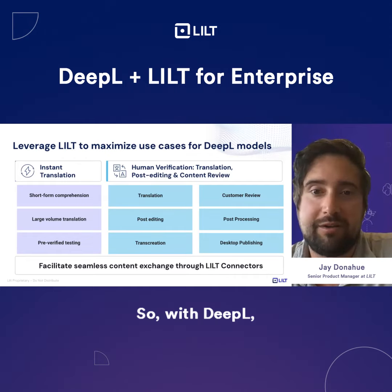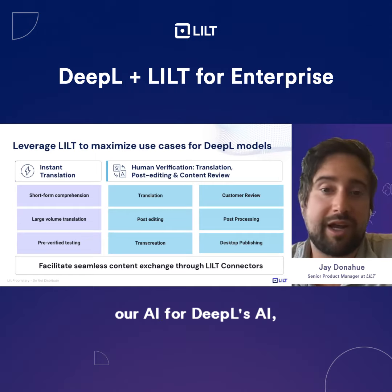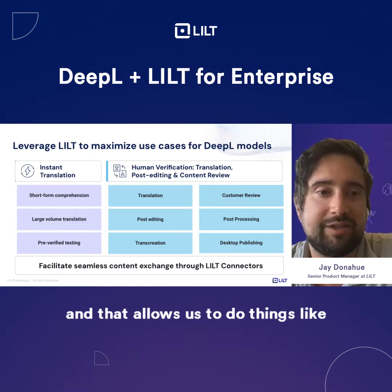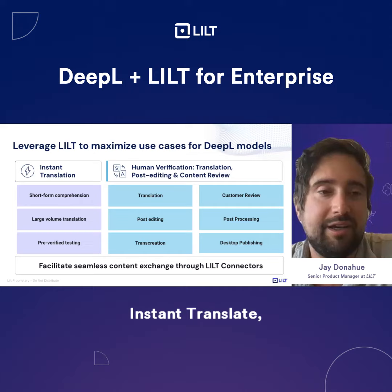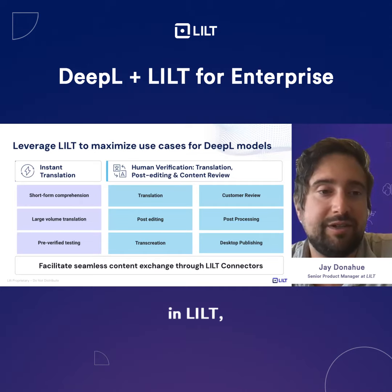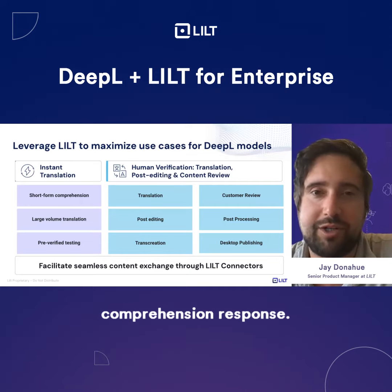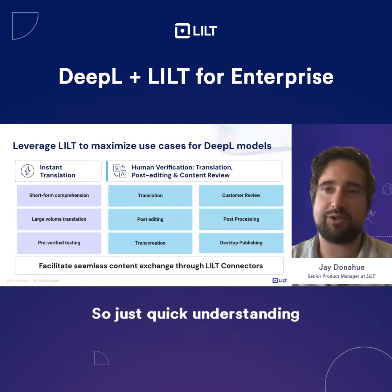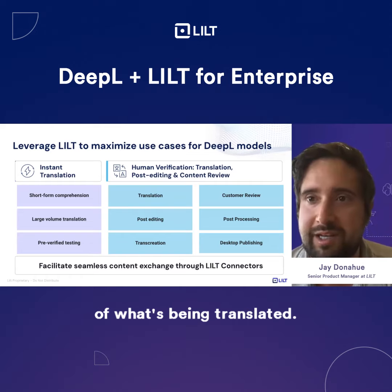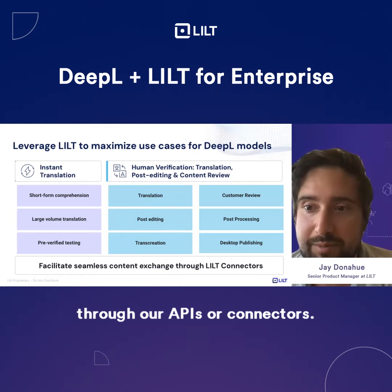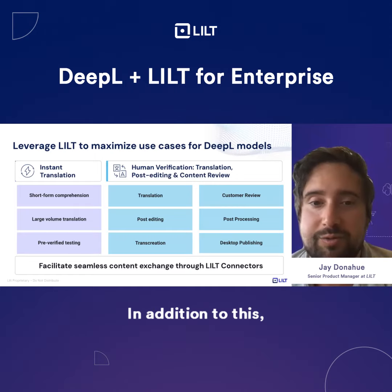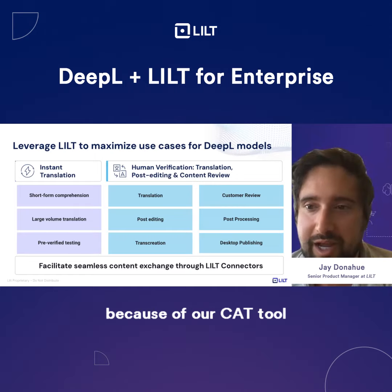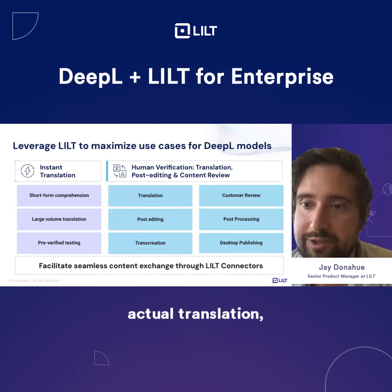With DeepL, we can swap out our AI for DeepL's AI. That allows us to do things like instant translate, where you can put text into the fields in Lilt and get a short-form comprehension response — just a quick understanding of what's being translated. You can also do large volume through our APIs or connectors.